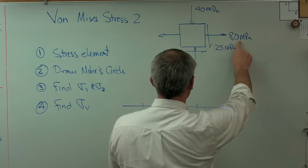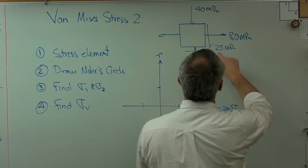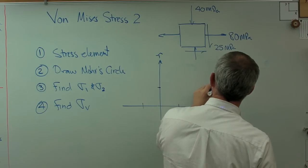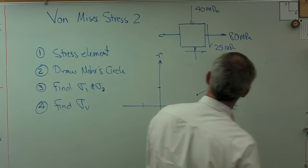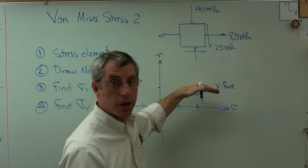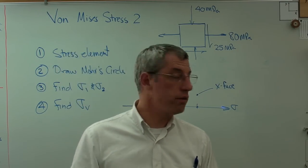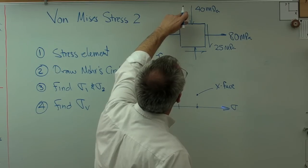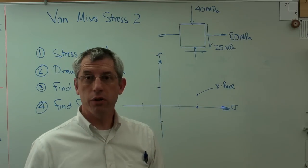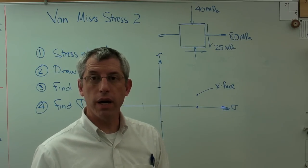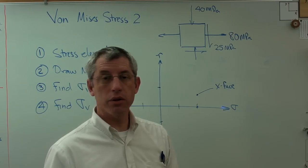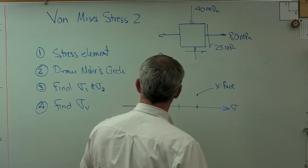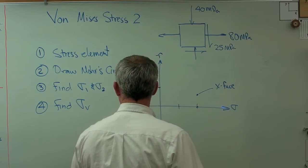So, plus 80 megapascals right there and plus 25. Well, that's 40, 25 must be right about there. So, that's the x-face. All right, 80 plus 25. Now, tau yx is negative tau xy, so that's going to be easy. And the other point we'll plot here is minus 40 megapascals on the y-face and minus 25 megapascals shear on the y-face. We'll go over to minus 40 and go down about that same amount here. Okay, so that's on the y-face.